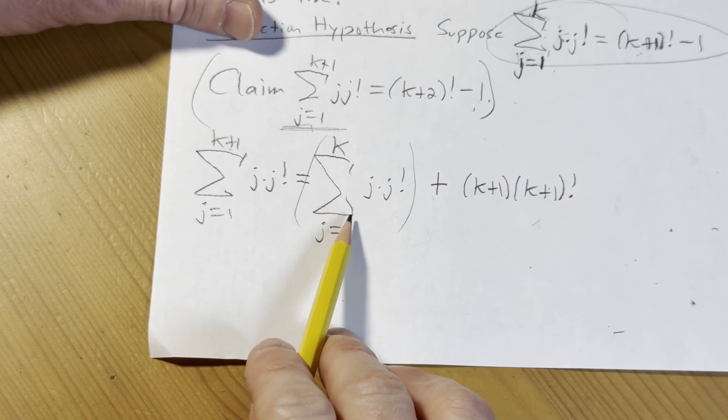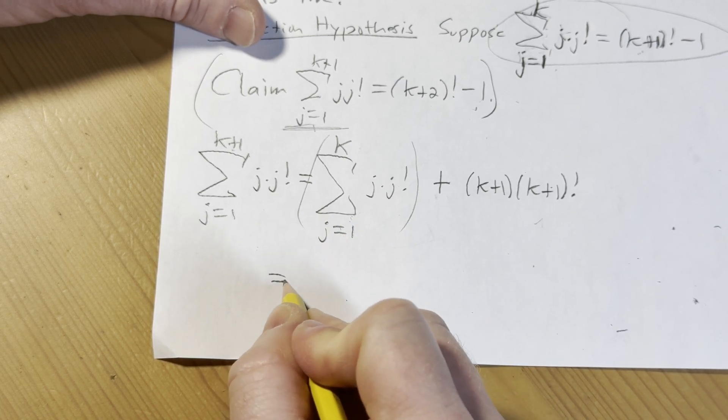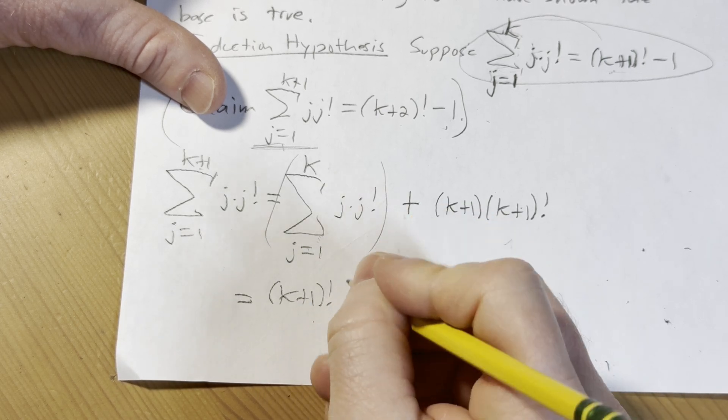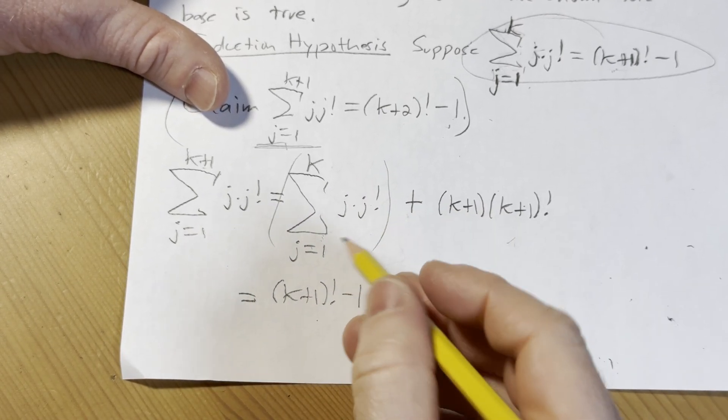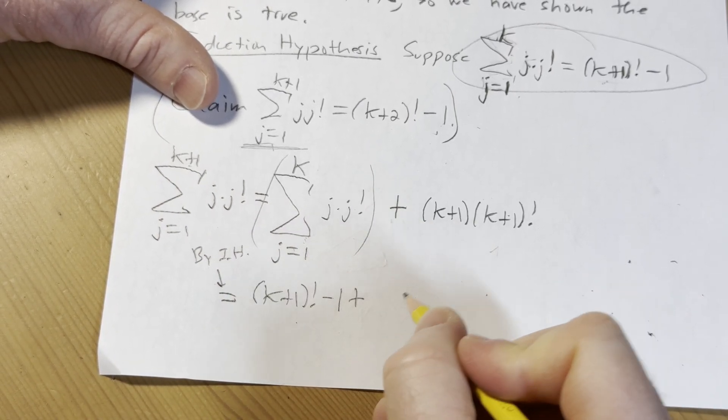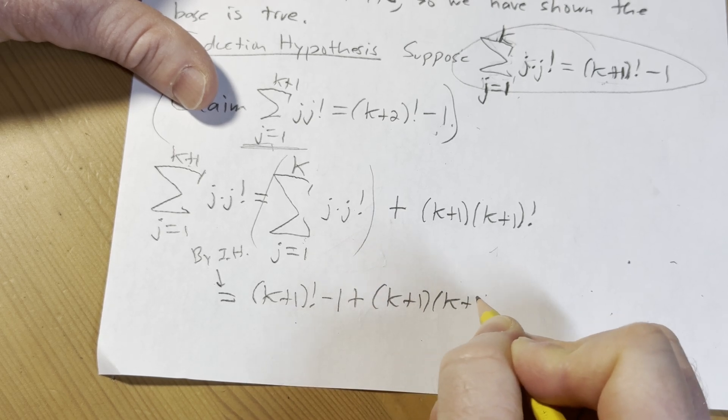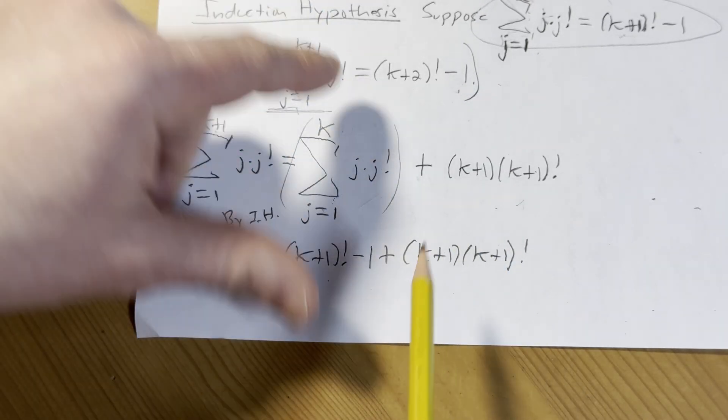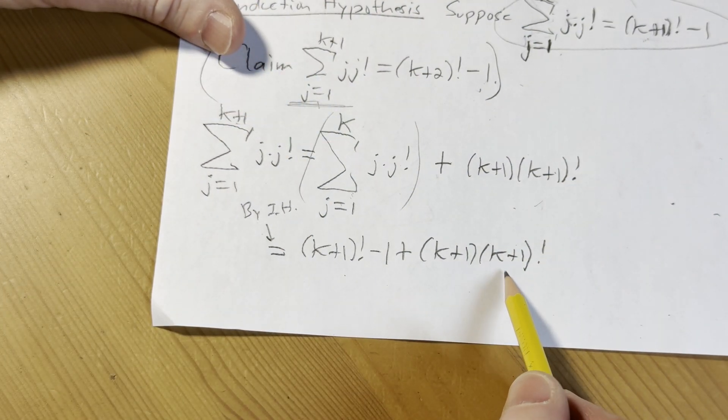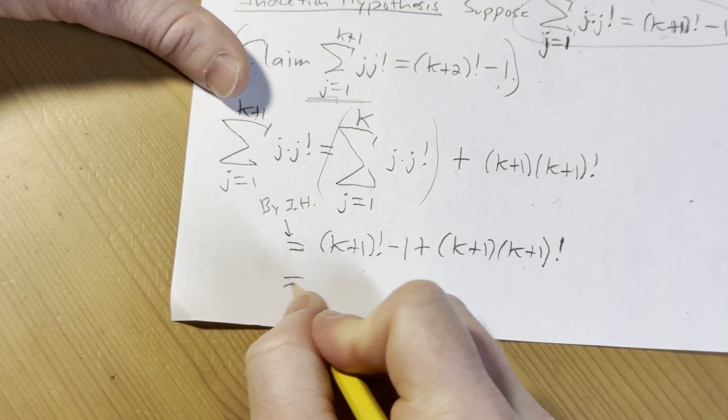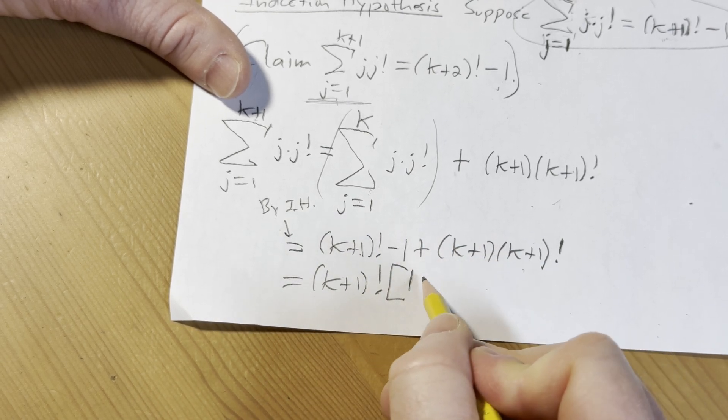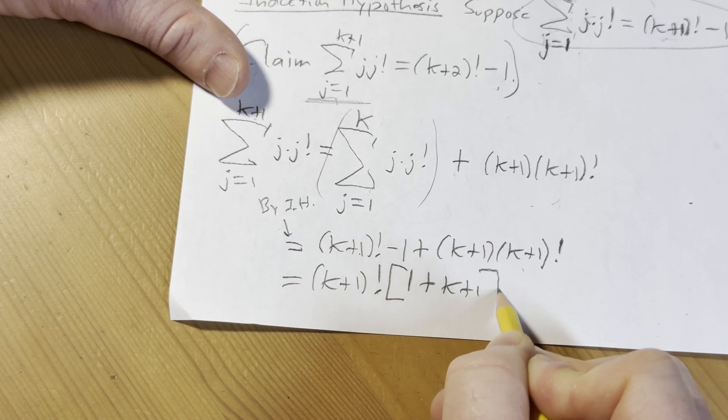And this piece here, okay, we know what this is, right? We know what this is. This is equal to, from this, it's going to be k plus 1 factorial minus 1, right? This is by the induction hypothesis, okay? Plus, then we have this piece here, here. And we have to get, where? We have to get here, right? So I'm thinking, well, I see that we can pull out a k plus 1 factorial. I don't know if it's going to help. Let's try it. I think it will. So we have 1 plus k plus 1. It does help.